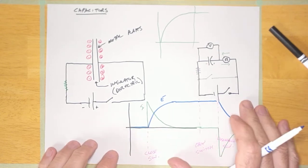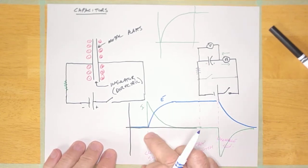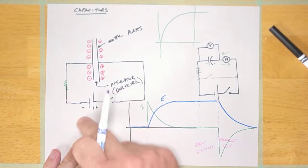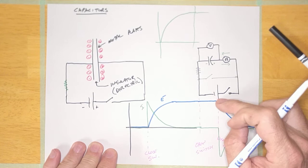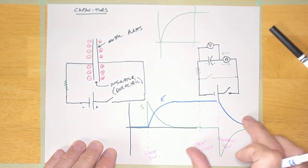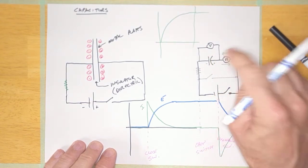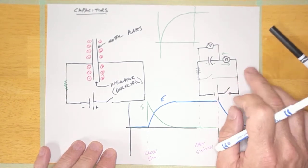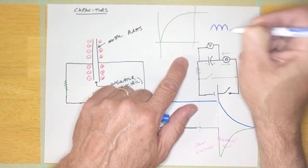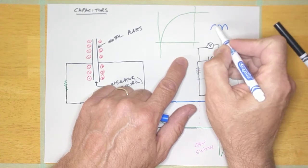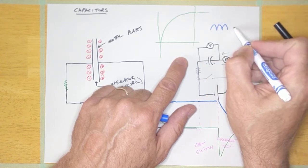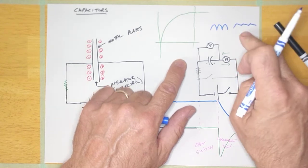There are two things I want you to notice about capacitors. First, anytime I change the voltage, there will be current — closing the switch changes the voltage, and discharging will also cause current to flow. So this thing will try to oppose a change in voltage. That's why you used it in electronics as a filter, where you had rectified DC that looked really bumpy, and you were smoothing it out by charging it during one part and discharging it from peak to peak — filtering the DC.